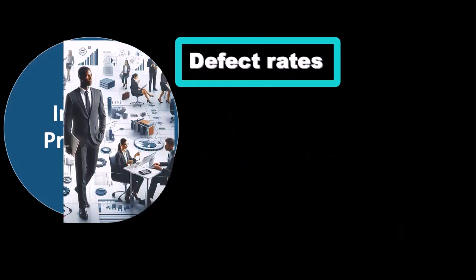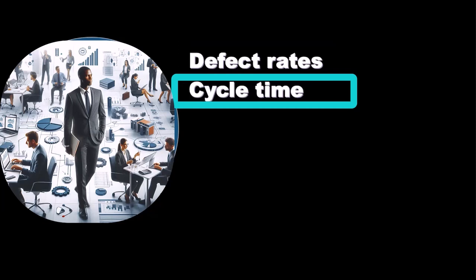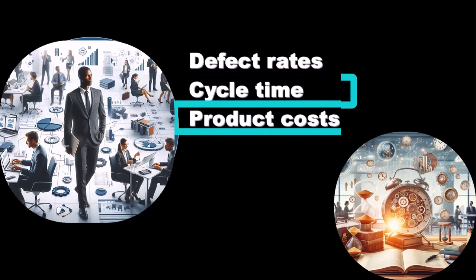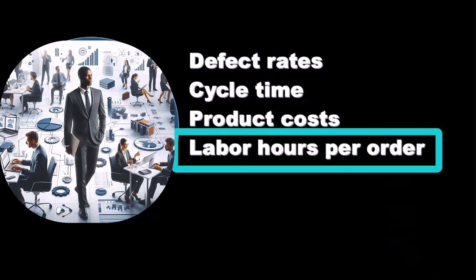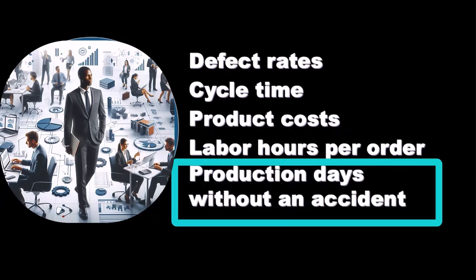For internal processes, we're measuring defect rates — how often is there defectiveness in a certain department — and we can compare from department to department using a rate. We can measure cycle time, how long it takes to go through the processing cycle, product costs, and labor hours per order. Everything is being broken down into numbers as much as possible so that we can do comparisons.